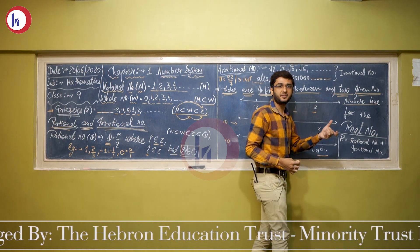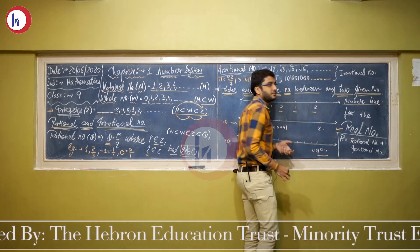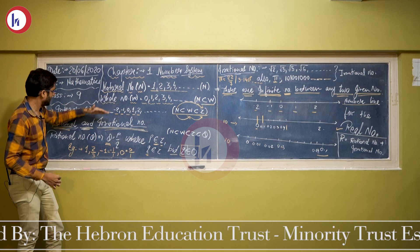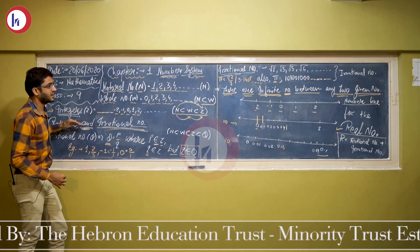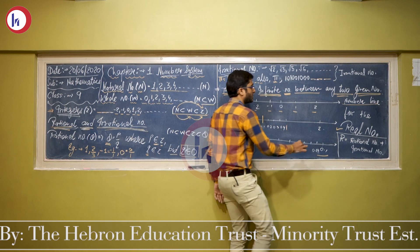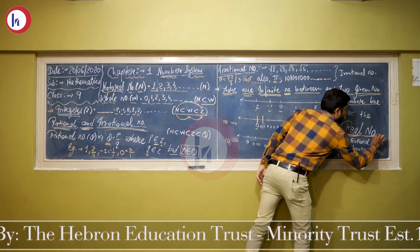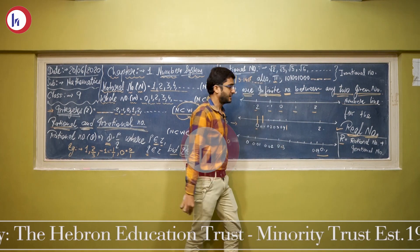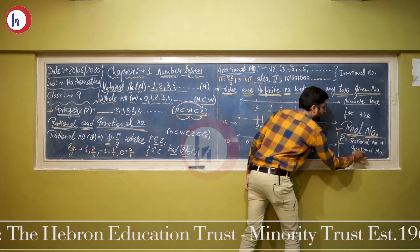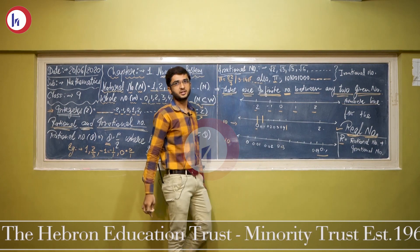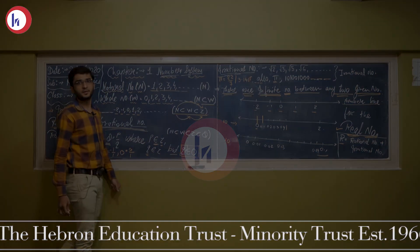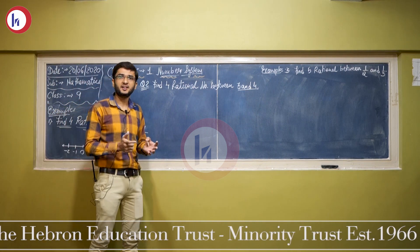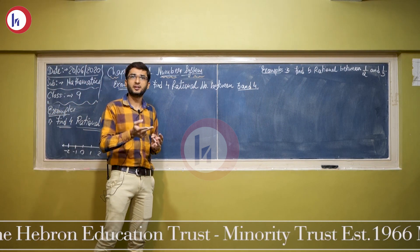When we talk about the complete number system — natural numbers, whole numbers, integers, rational numbers, and irrational numbers — the total system is called real numbers. Real numbers are represented by R, where R equals rational numbers plus irrational numbers. And as we know, there are infinite numbers between any two given numbers.